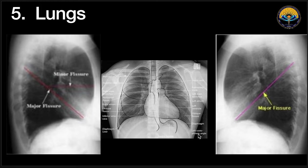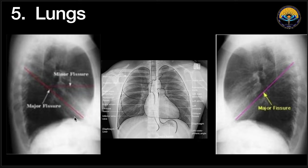Coming to the lungs, we can see the left lung and the right lung. In the left lung there is one major fissure which divides it into an upper lobe and a lower lobe, as seen on the lateral X-ray. In the right lung, there is an oblique or major fissure and a minor or horizontal fissure. On the lateral view, the minor or horizontal fissure divides the lung into upper, middle, and lower lobes.